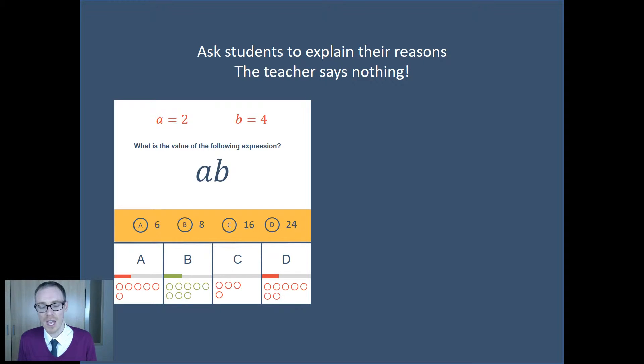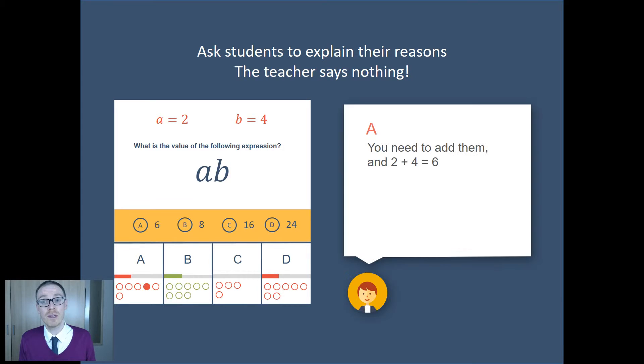Now, what the teacher does—and this is just my way of doing it—is I always start with A, then B, then C, then D, so kids don't start to think I always start with the wrong answer or the right answer. I ask for a volunteer who's answered A, or maybe I'll pick a child in particular, and I'll say, 'Can you give me your reason? Why do you think the answer is A?' As a teacher, my only role is to make sure